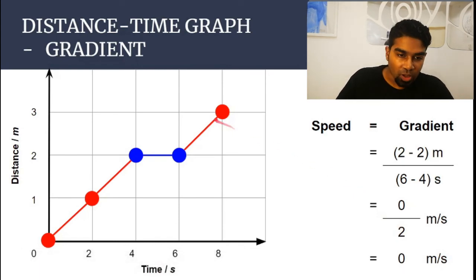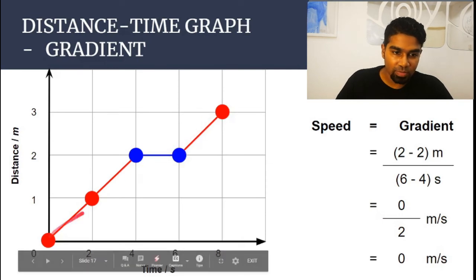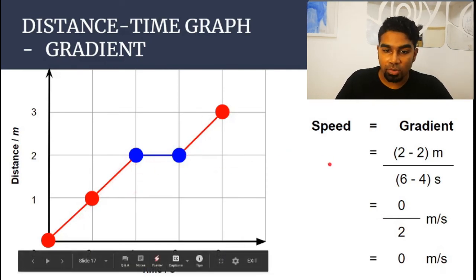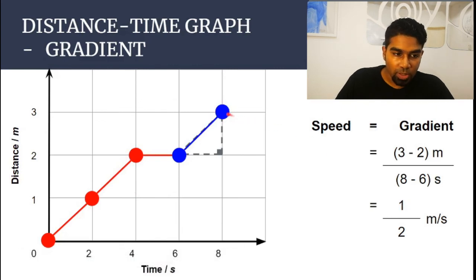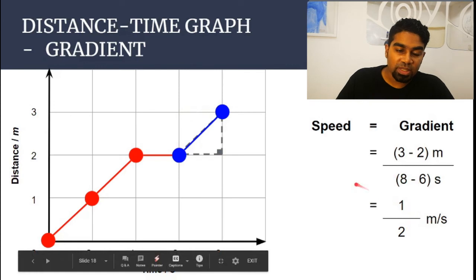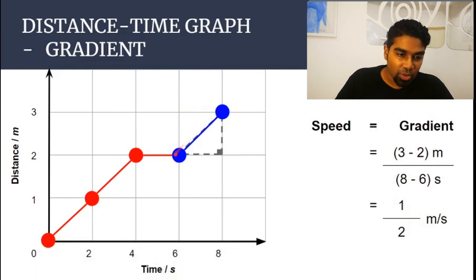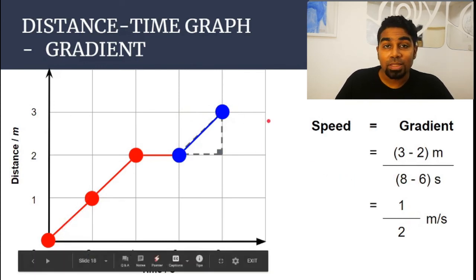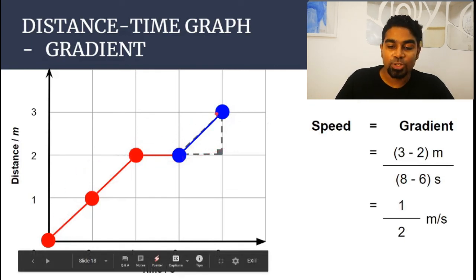Now let's check the segment from 6 to 8 seconds. The gradient is (3 minus 2) over (8 minus 6), which is 1 over 2 meters per second — the same gradient as before. That means Mr. Red was traveling at the same speed from 0 to 4 seconds and from 6 to 8 seconds. That's all for today guys.